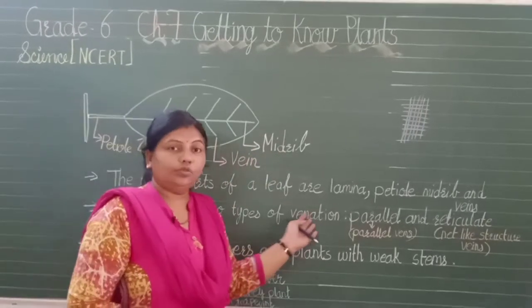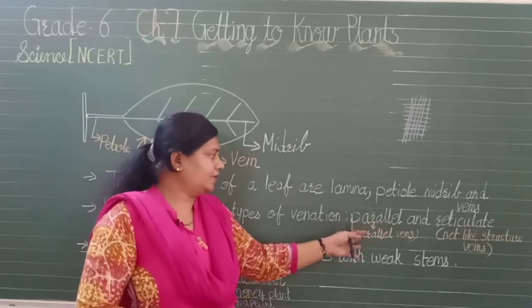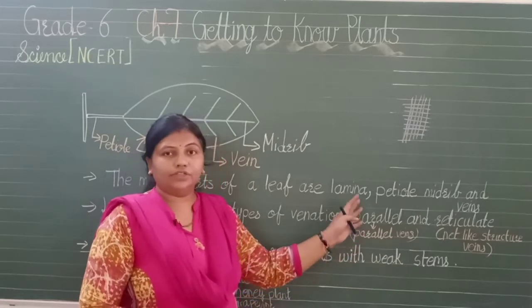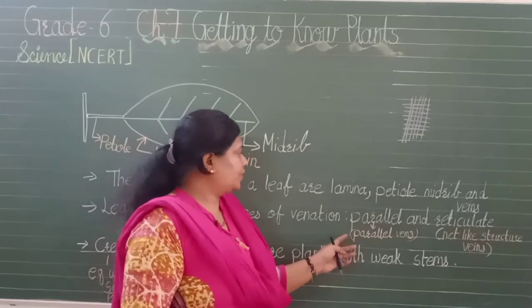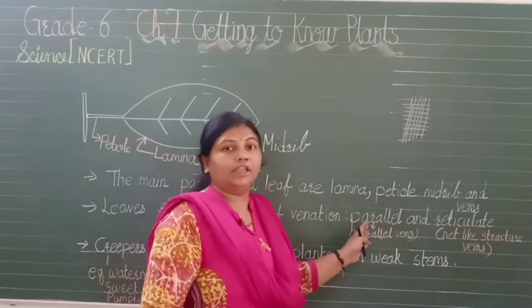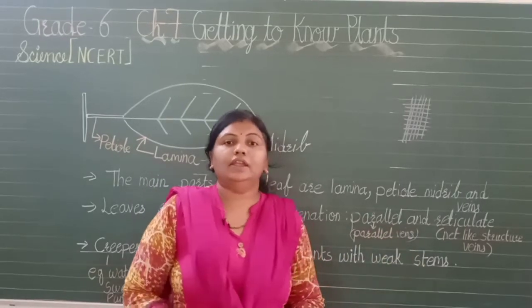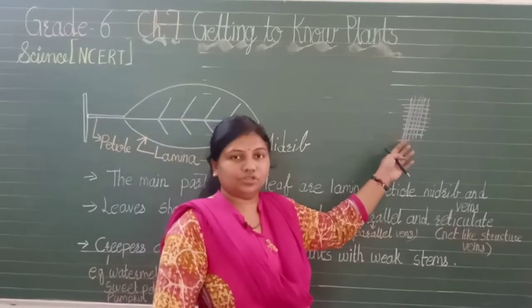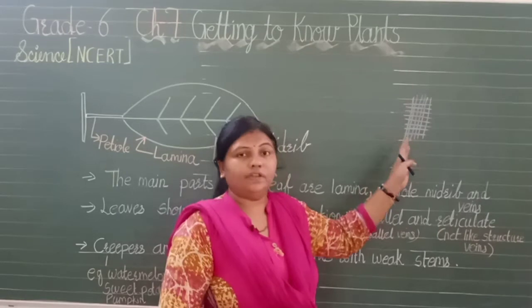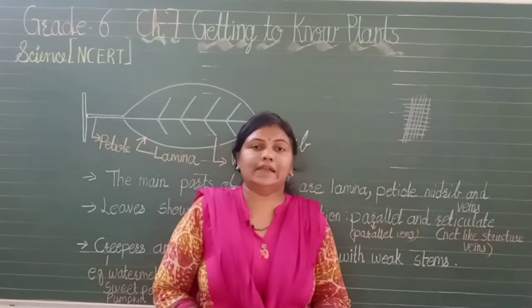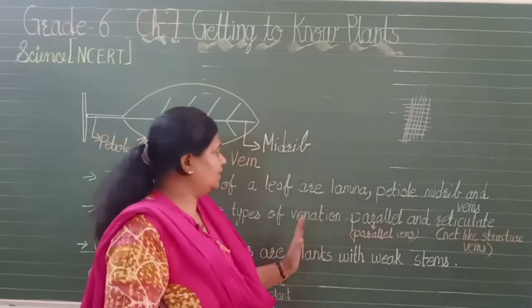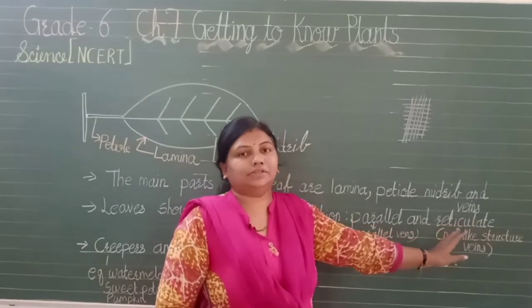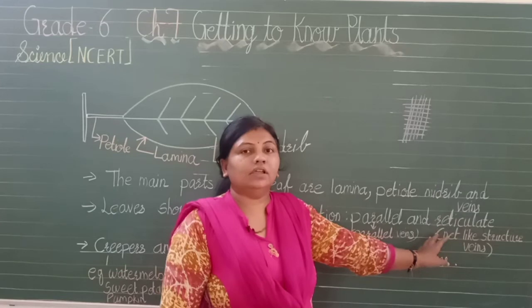There are two types of venation: parallel venation and reticulate venation. In parallel venation, the veins in the leaf run parallel. In reticulate venation, the veins form a net-like structure in the leaf.